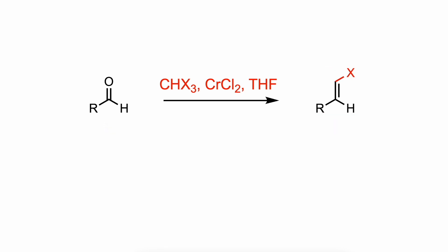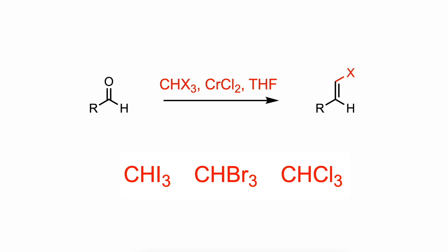The Takai olefination is the chromium-2 mediated 1-carbon homologation of aldehydes with haloform. The haloform used can be iodoform, bromoform, or chloroform — iodoform being the more reactive and chloroform the one that gives the best E-selectivity.